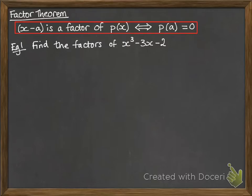Find the factors of this cubic. Now, a cubic has three factors, so we're going to be trying to find three different brackets that would multiply to make that cubic. So we call this cubic p(x).